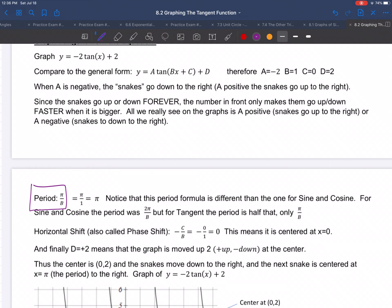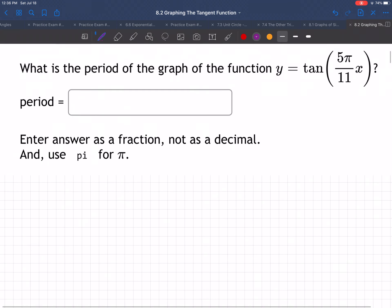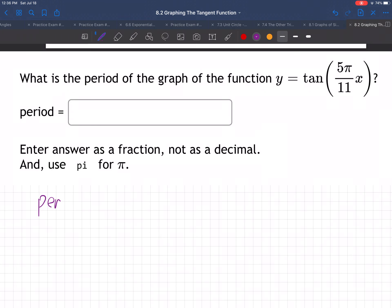That's a little bit different. Remember for sine and cosine, it was 2π over b, but the tangent is only π over b for its period. We have a little bit different period formula.